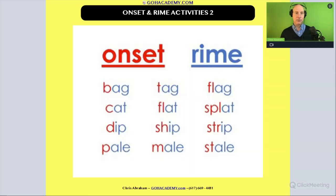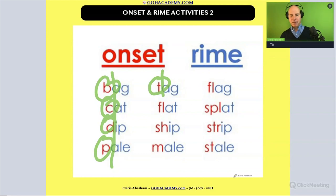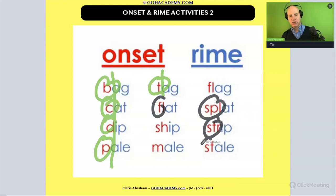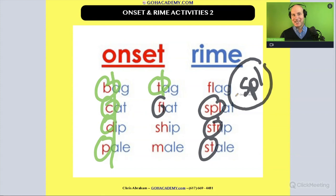For example, when we think about onsets and rhymes, segmenting into onset and rhyme — these are all initial sounds, initial phonemes. The onset is one phoneme. But when we get to segmenting words with blends — like 'fluh,' 'splat,' 'strut,' 'street' — these are all blends. Something like 'spl' in 'splat,' that is the onset, but it's an onset made up of three distinct sounds. It's a blend, a cluster.